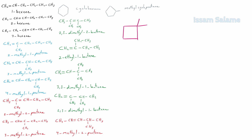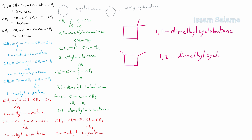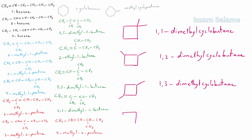What if we have two methyls at the same carbon of cyclopentane? Its name is 1,1-dimethylcyclopentane. Two methyls at two adjacent carbons gives 1,2-dimethylcyclopentane. Two methyls at two opposite carbons gives 1,3-dimethylcyclopentane. And when we have an ethyl group attached to cyclobutane, its name is ethylcyclopentane.